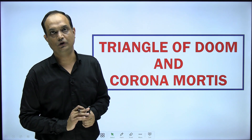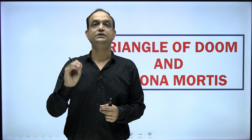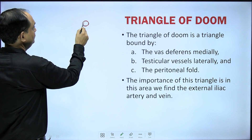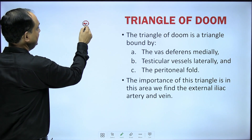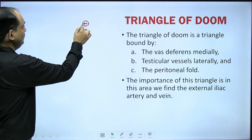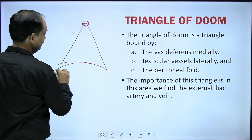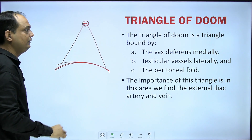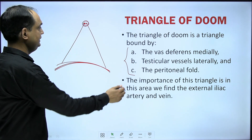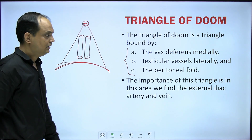The triangle of doom is an area where the deep inguinal ring forms the apex. From the deep ring, two very important structures enter into the inguinal canal: one is the vas deferens and another is the testicular artery. One boundary is formed by the vas deferens, another by the testicular artery, and the base is formed by the peritoneal fold. The triangle of doom contains two major vessels: the external iliac vein and the external iliac artery.